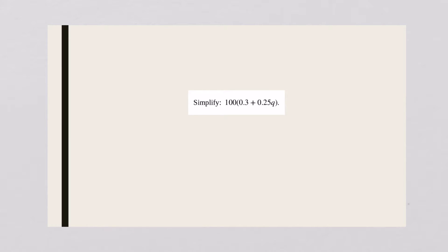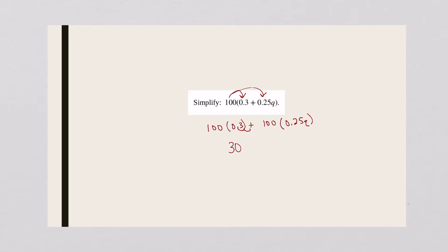When you multiply anything times 100, you are simply just moving your decimal two places to the right. So 100 times 0.3 plus 100 times 0.25q. One hundred times 0.3 — move that decimal two places to the right — I get 30, plus 100 times 0.25q, I get 25q.